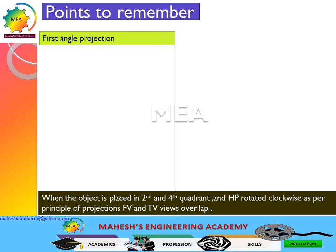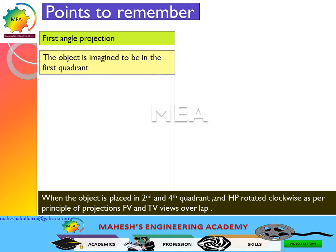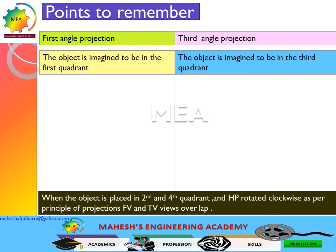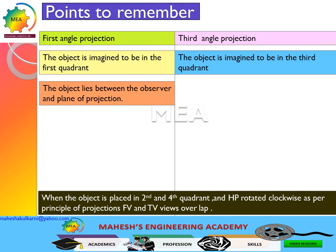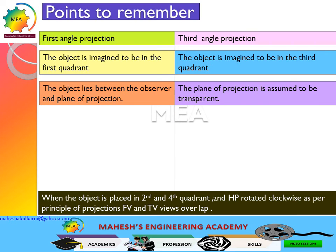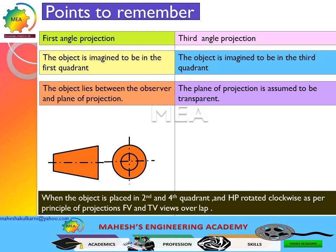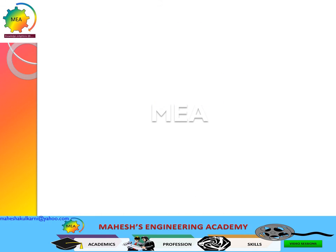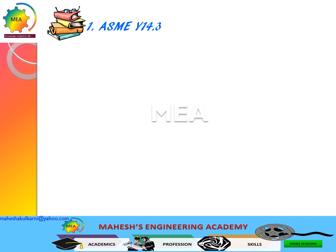Points to remember: In case of first angle projection, the object is imagined to be in the first quadrant. In case of third angle projection, the object is imagined to be in the third quadrant. In case of first angle projection, the object lies between the observer and the plane of projection. In case of third angle projection, the plane of projection is assumed to be transparent. The symbols of each projection are different. For further information, refer to ASME Y14.3.